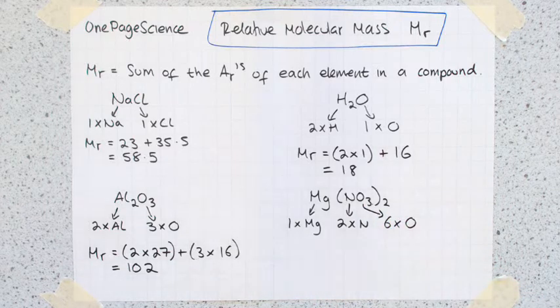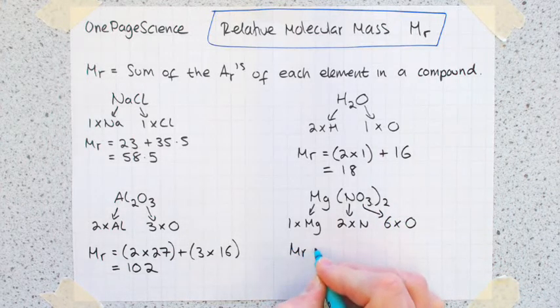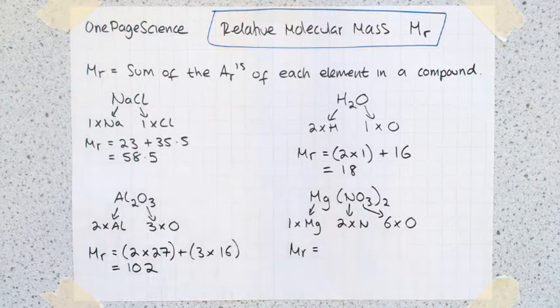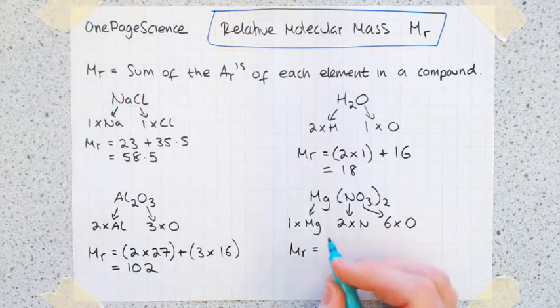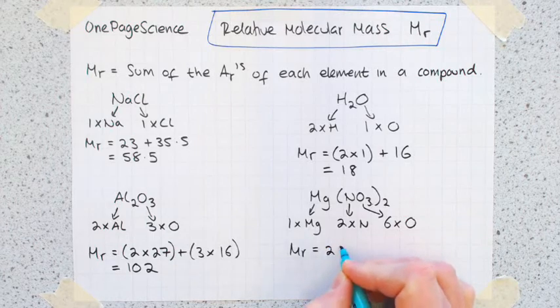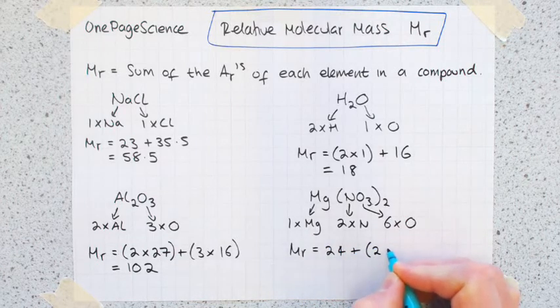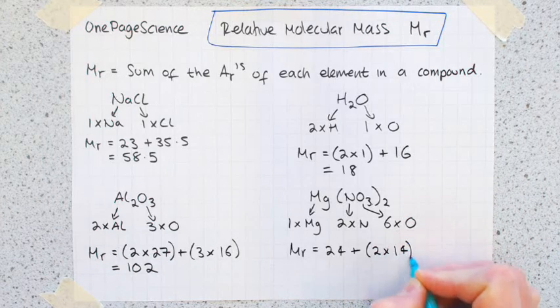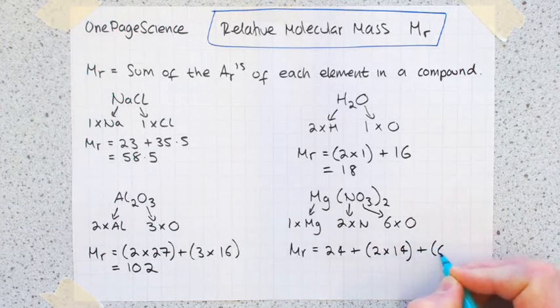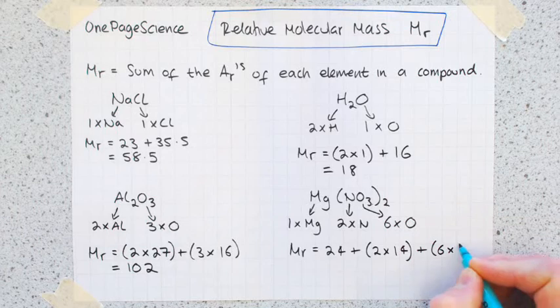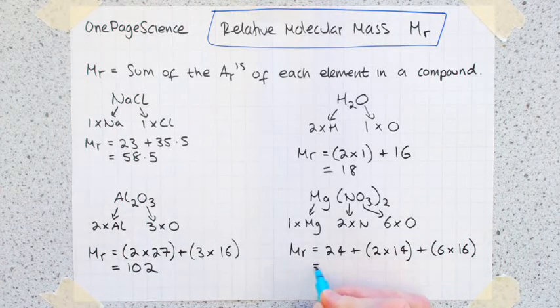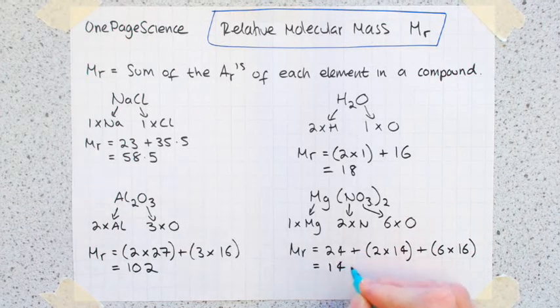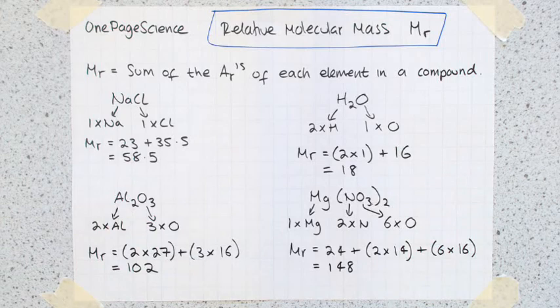So the relative molecular mass, just add these up. Again, grab your periodic table, look these values up. So magnesium is 24, two times nitrogen, which is 14, plus six times oxygen, which is 16. Write it like that, that's exactly how you put it in your calculator, and that comes out with a value of 148.